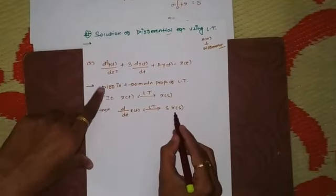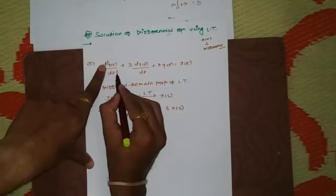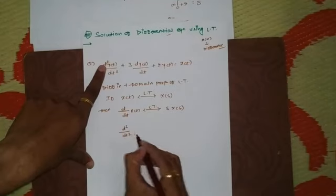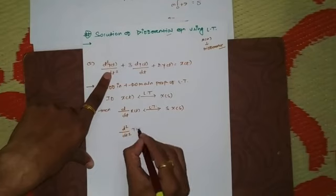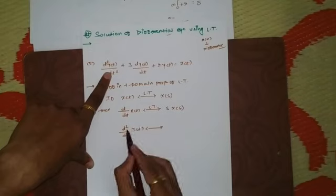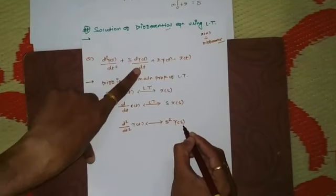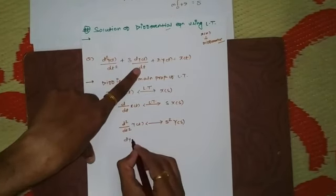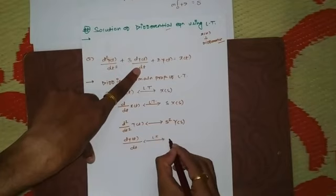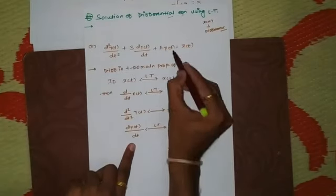Now let us use this property to find the solution of this differential equation. We can see d²/dt² of y(t): the order is 2, so we get s²·Y(s). Similarly, dy/dt has Laplace s·Y(s), and y(t) has Laplace Y(s).